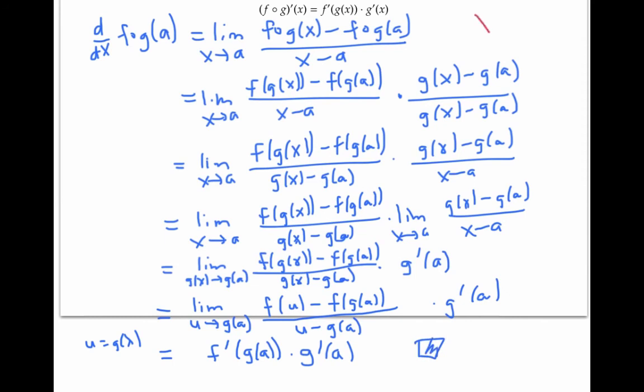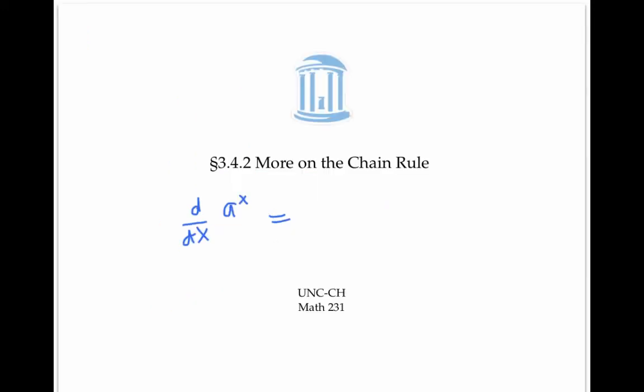Let me emphasize again that this is just a pseudo-proof — it's not quite airtight because g(x) minus g(a) might be zero. In this video, we saw more examples of the chain rule and a justification of it. We also saw that the derivative with respect to x of a to the x is equal to ln a times a to the x.